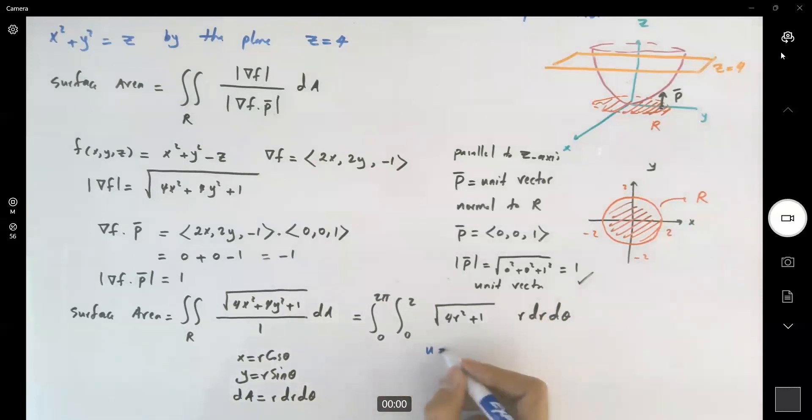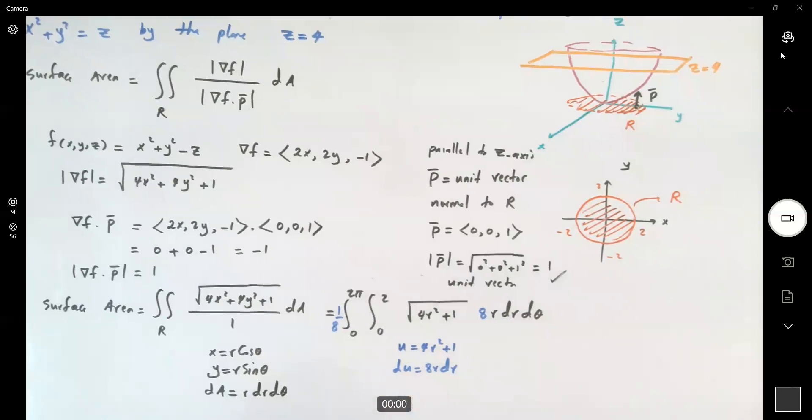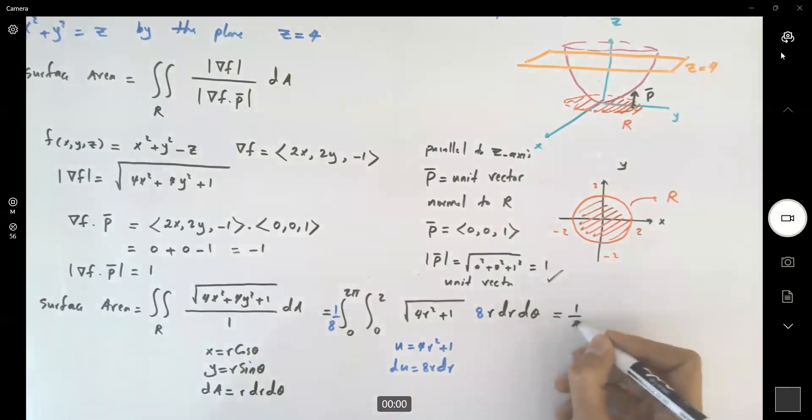u is equal to 4r squared plus 1, du is 8r dr. So you're going to multiply it by 8 and divide it by 8. This becomes 1 over 8. And here, what do we have? Can we separate this? Of course, we can separate this.